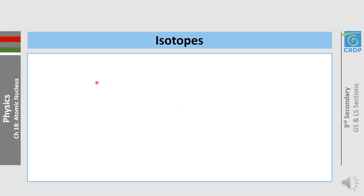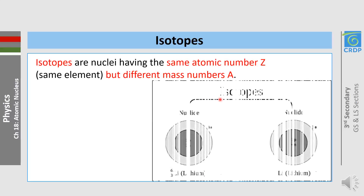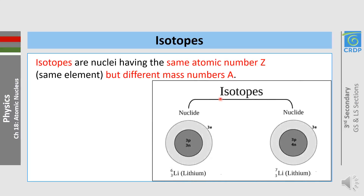Isotopes are nuclei having the same atomic number Z but different mass numbers A; they are the same element. For example, isotopes of lithium have the same atomic number 3 but different mass numbers.